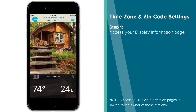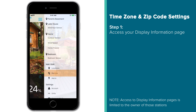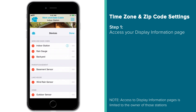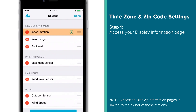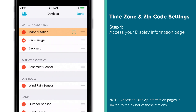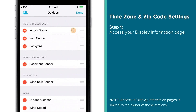To access your station's display information, first enter the main menu and select the Devices tab. Here you'll see a list of all the devices you're receiving data from. Within this list, locate your station's device tab. If you are the owner of the station, you will also see a blue Info icon next to its device name. Press this icon.